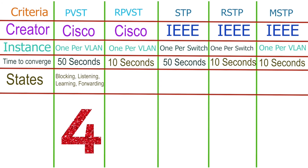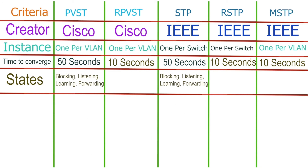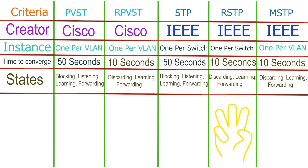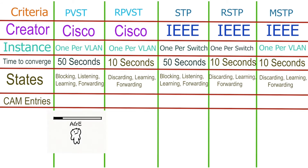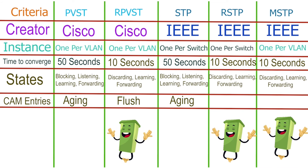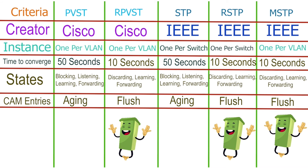STP and PVST use four states — blocking, listening, learning, and forwarding — to reach convergence. STP and PVST use the CAM table's aging feature to remove old entries; they use the listening state for this purpose. RSTP, RPVST, and MSTP flush CAM table entries in the learning state.